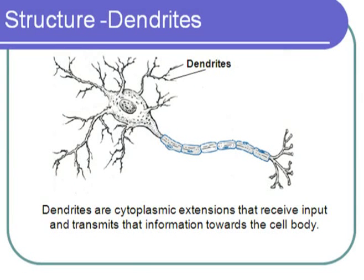Neurons have many dendrites, and dendrites are cytoplasmic extensions that are used to receive input. This information is then transmitted towards the cell body and determines whether or not the neuron fires an action potential. For some neurons, the dendrite branches can be quite extensive and there can be thousands of synapses upon the dendrites, all inputting information to that particular neuron.